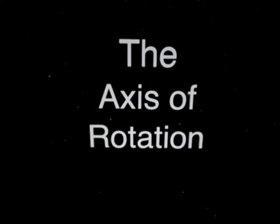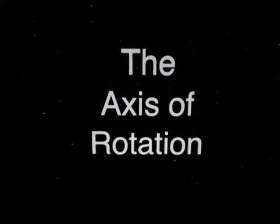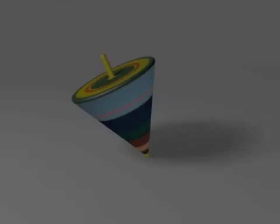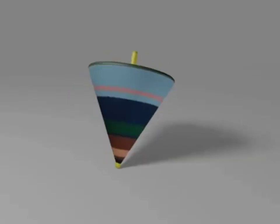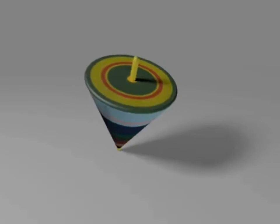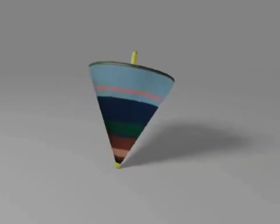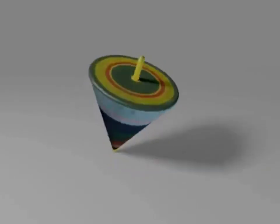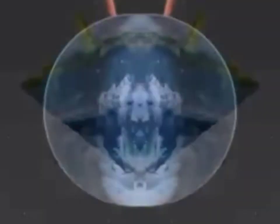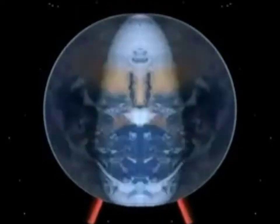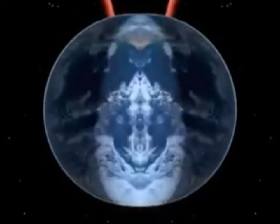The axis of rotation, also known as the wobble effect. The earth's axis has an axis of rotation, and just like a top, the axis spins. The angle does not change, only the direction of the axis.